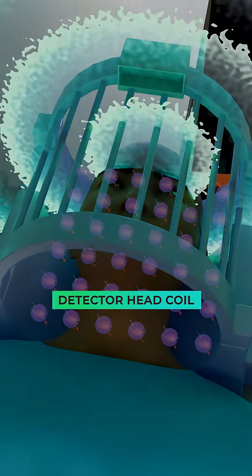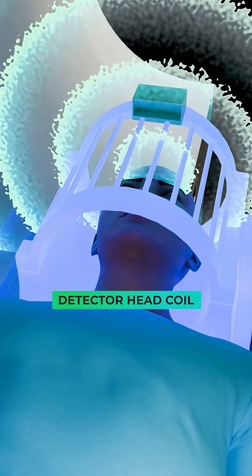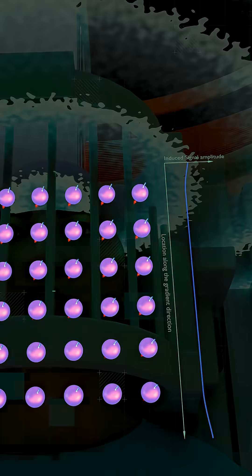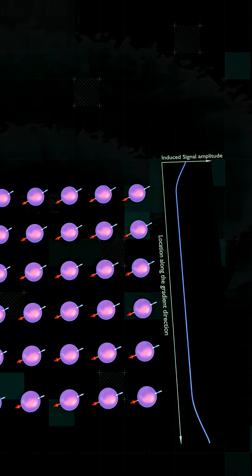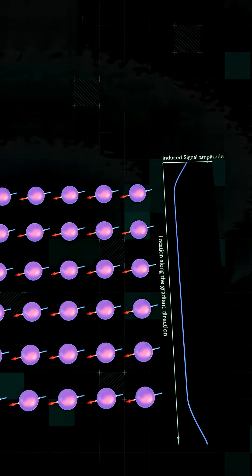At this moment, detector coils placed near the body pick up the collective wobble as an oscillating signal. But by itself, this signal is just one big noise.